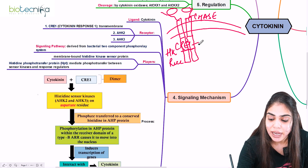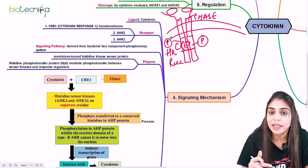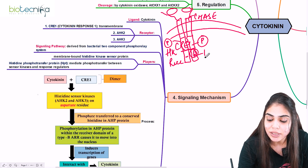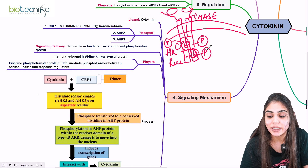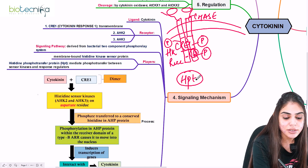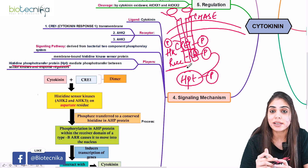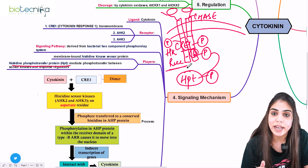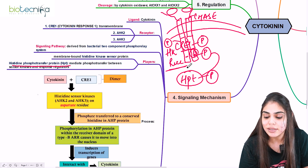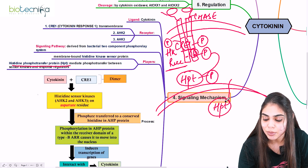The kinase domain is phosphorylated, transferring the phosphate group from the histidine kinase residue to the receiver domain, where the aspartate amino acid accepts it. Once the receptor is fully activated, it activates a separate protein called HPT — histidine phosphotransfer protein — to which the phosphate group is added. This HPT, now phosphorylated, translocates from the cytosol into the nucleus.